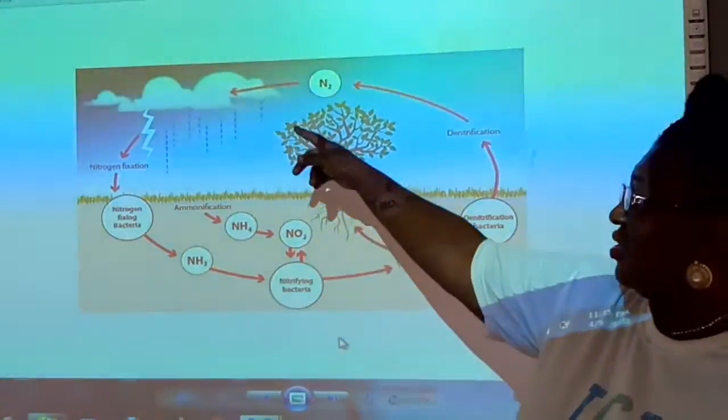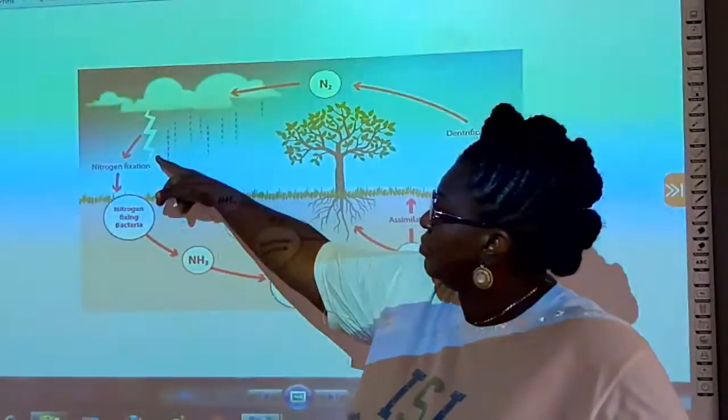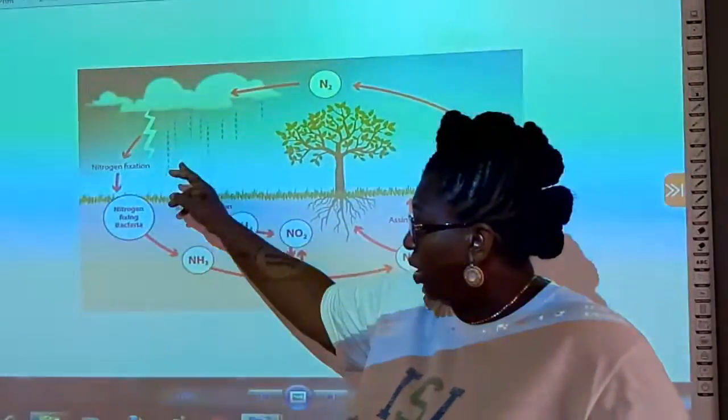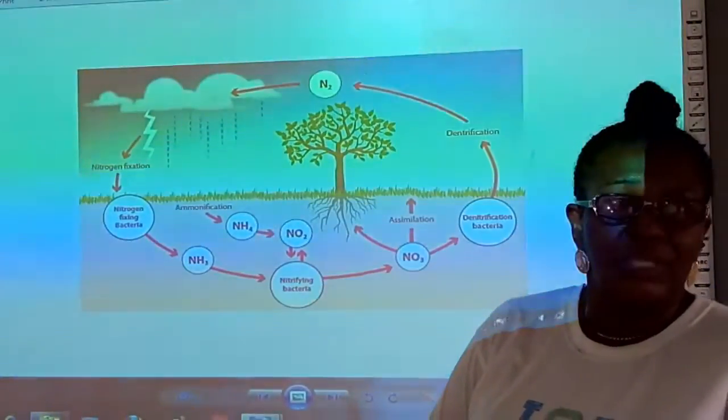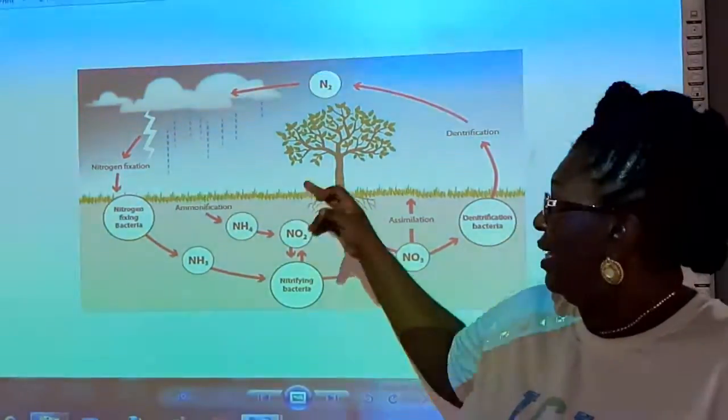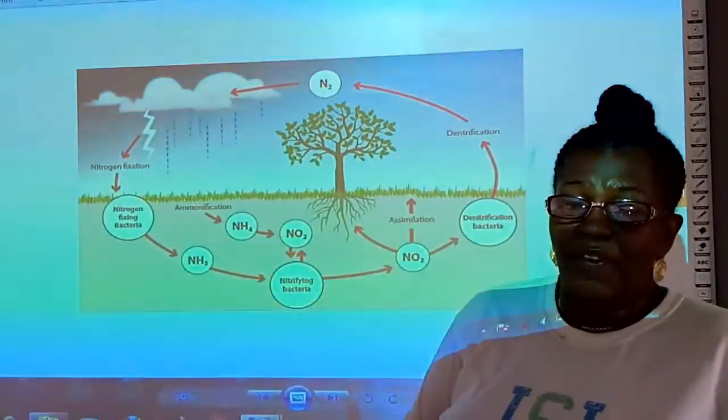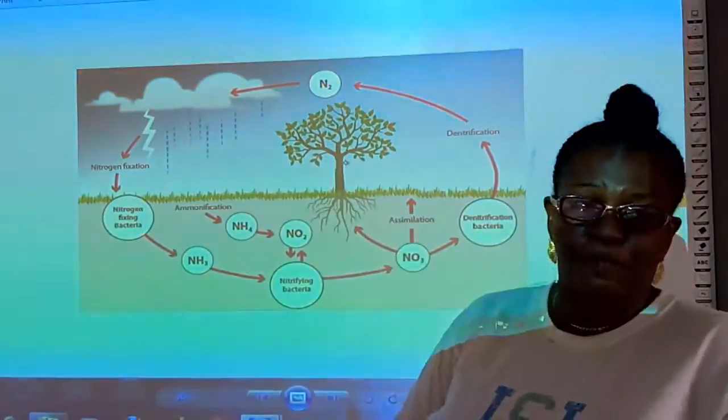When there's an electric discharge like that, nitrogen comes down, reacts with the oxygen, dissolves in the rainwater and becomes nitrate coming down to the soil. The plants take up this nitrogen in form of nitrates and it becomes plant protein.